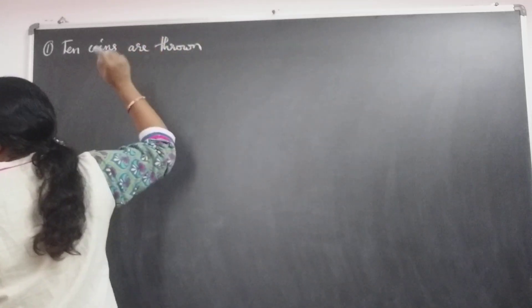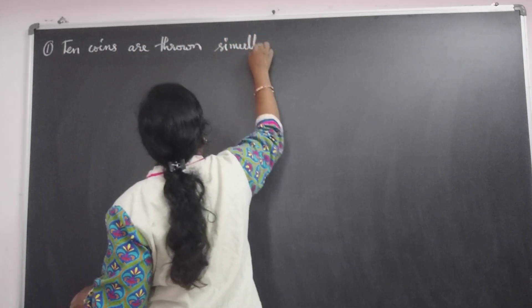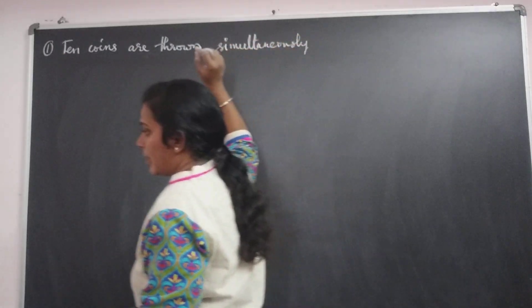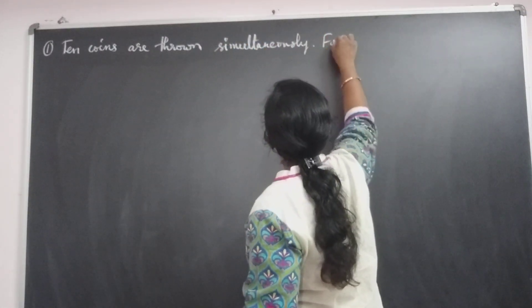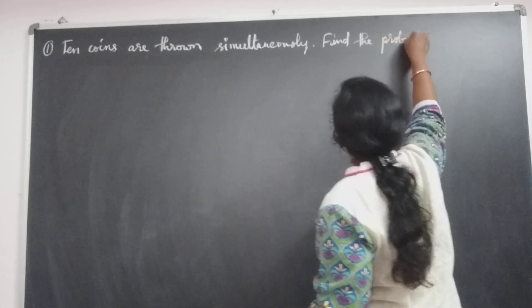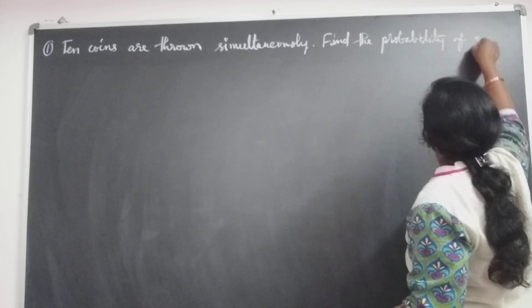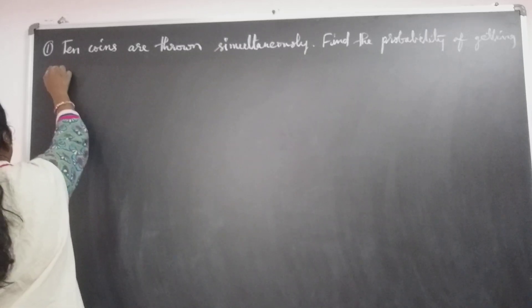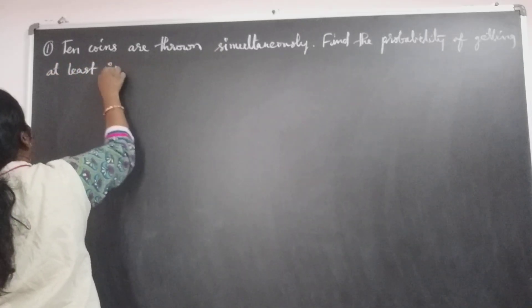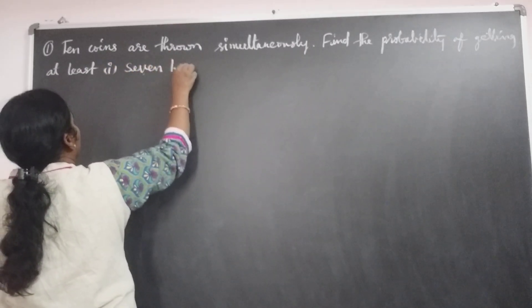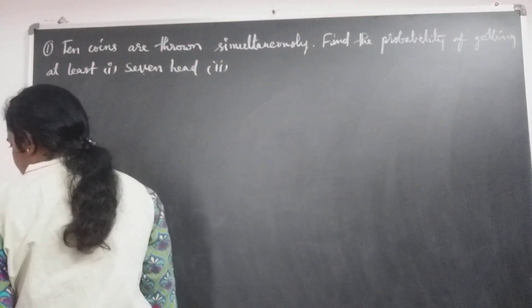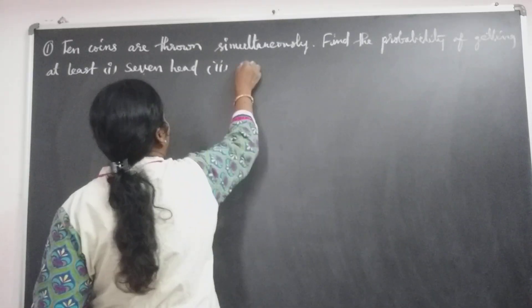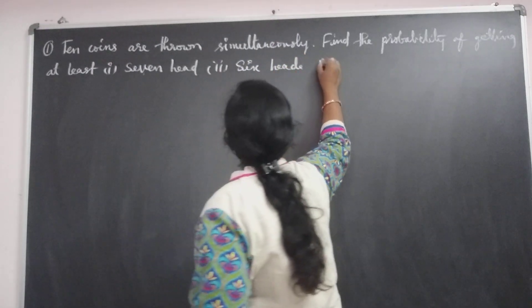The problem: 10 coins are thrown simultaneously. Find the probability of getting: first, at least seven heads; second, at least six heads and one head; third, at least one head.